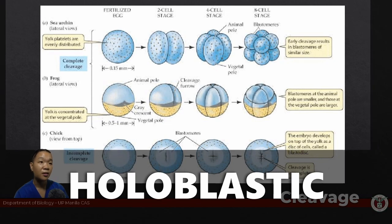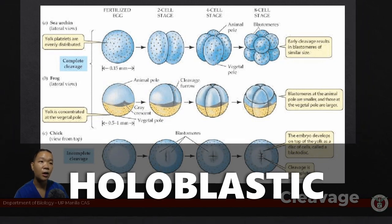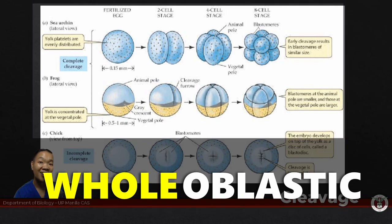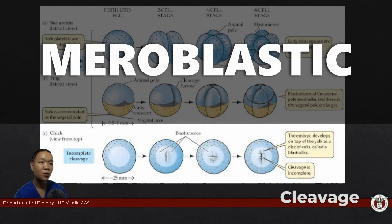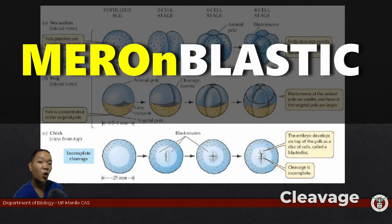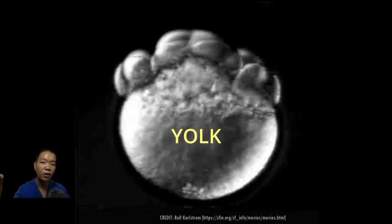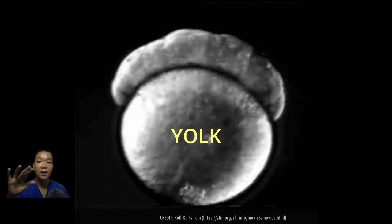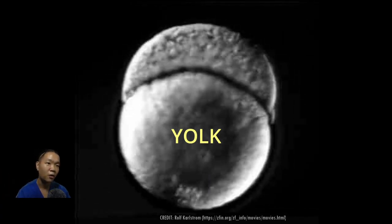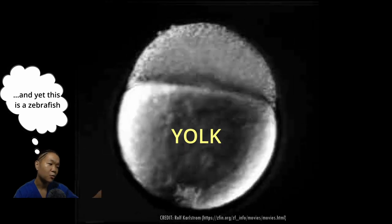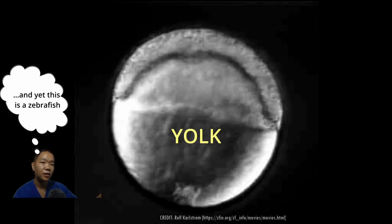Holoblastic cleavage means cell division occurs throughout the whole egg. Meroblastic means cell division occurs only at portions of the cytoplasm with less yolk. And discoidal is an extreme form of meroblastic cleavage, so it's only really confined to a small cap of cells sitting on top of a mass expanse of yolk — which you often see in birds, and some reptiles, and egg-laying mammals.